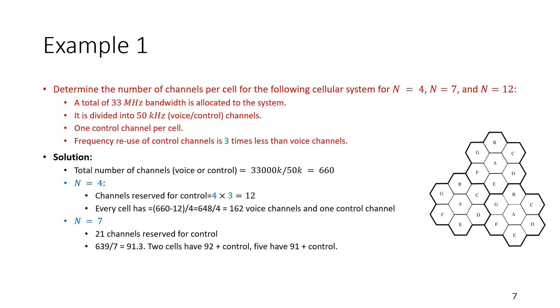It's time for the example. So it says in this example, I'm going to get example one, determine the number of channels per cell for the following cellular system for N equal to 4, N equal to 7, and N equal to 12. I'll show you the answer for the first two, and it's your job to write the answer in the comment section for N equal to 12. A total of 33 megahertz bandwidth is allocated to the system. It is divided into 50 kilohertz voice control channels, one control channel per cell. The frequency use of control channels is three times less than voice channels.